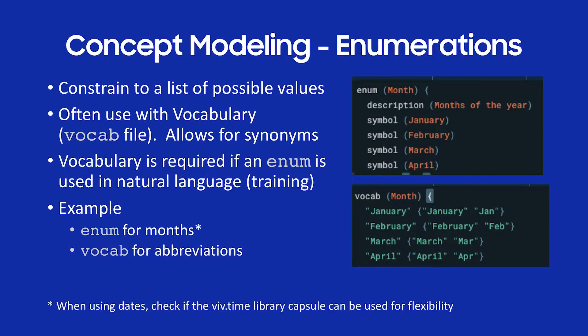Jumping right in and talking about concept modeling, the first thing I want to talk about is enumerations. Enumerations are how you constrain a concept to a list of possible values. In this sample code on the right, I have an enumeration set up for the month — January, February, March, April — which means inputs would be limited to months of the year.